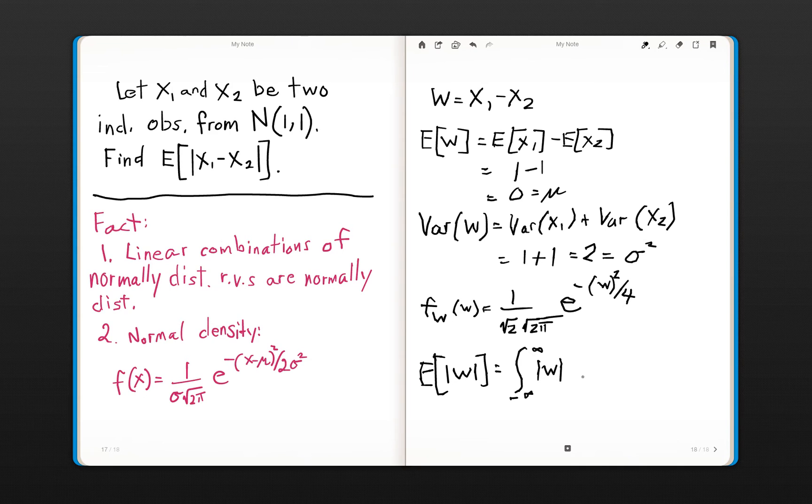And it'll become really clear why we need to know that density. So this is what we need to compute. And I'll turn the page here and continue to actually work this out, and then show you the trick that we're going to use to actually compute the expected value of absolute value of W.